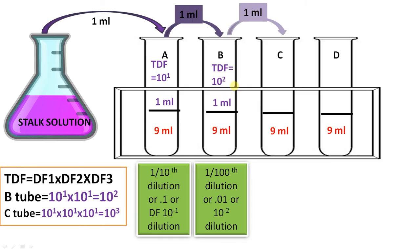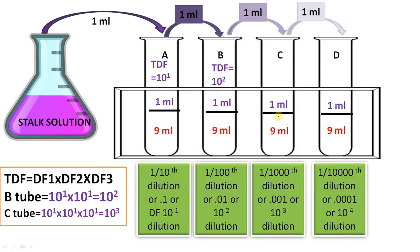As this is a serial dilution process, again 1 by 10 dilution happening in test tube C. So that makes 1 by 1000 dilution or 10 raised to minus 3 dilution. That means thousand times diluted compared to this stock solution. Total dilution factor will be 10 raised to 3 in this case, that is 10 raised to 1 into 10 raised to 1 into 10 raised to 1, that makes 10 raised to 3.